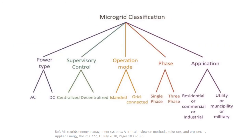Microgrid classification: as per power type, there are two types — AC and DC. Nowadays people have also started working on hybrid microgrid. Supervisory control includes centralized and decentralized operation modes. Microgrids also operate in islanded mode and grid-connected mode, and can be single phase or three phase. As per applications: residential, commercial, industrial, utility, municipality, and military.